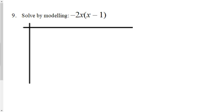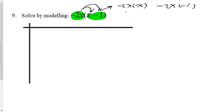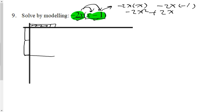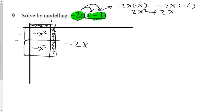Question 9 is modeling a monomial multiplied by a binomial. Without modeling we'd use distributive property: negative 2x times x gives negative 2x squared, and negative 2x times negative 1 gives positive 2x, so the solution is negative 2x squared plus 2x. For the model, I put negative 2x as one side — open because it's negative — and a positive x and negative 1 as the other. Wherever lines cross, a positive times a negative gives negative x squared; a negative times a negative gives positive x. Solution: negative 2x squared plus 2x.